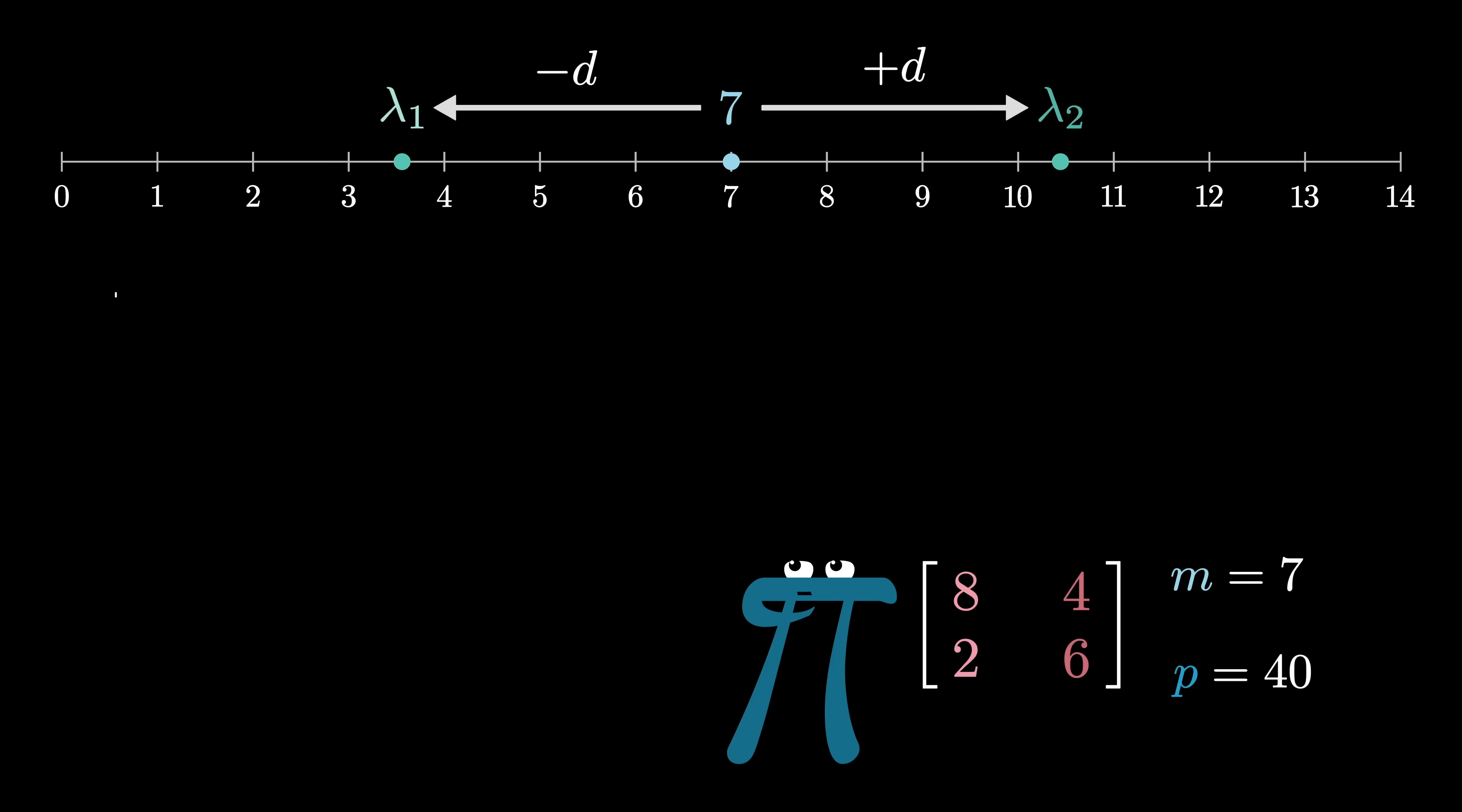You also know that the product of these two numbers is 40. Now to find D, notice that this product expands really nicely. It works out as a difference of squares. So from there you can directly find D. D squared is 7 squared minus 40, or 9, which means that D itself is 3.